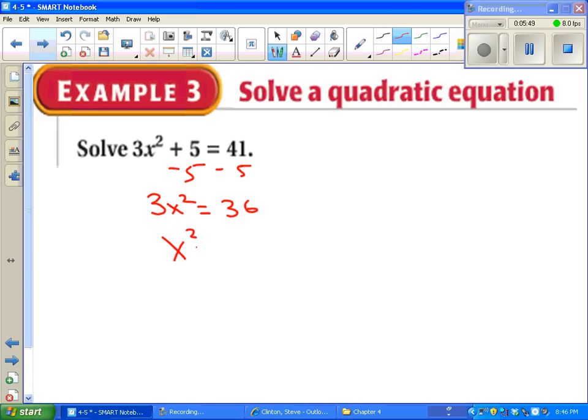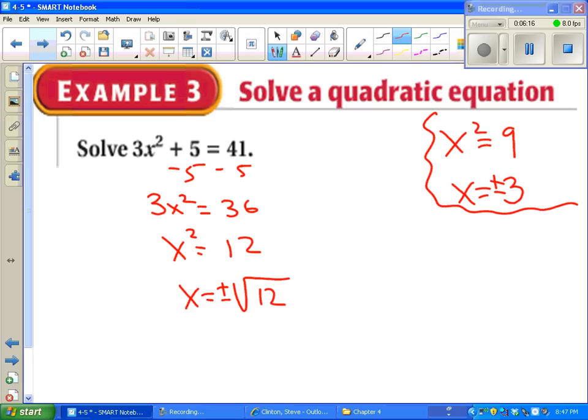Divide by 3. Take the square root. And you have to say plus or minus. If you don't understand why we have to say plus or minus, let's think of a simpler example. x squared equals 9. If you just say x equals 3, you're only getting half the story. 3 times 3 is 9. Yes, that is a correct solution. But negative 3 times negative 3 is also 9. So when you take a square root, you have to say plus or minus.